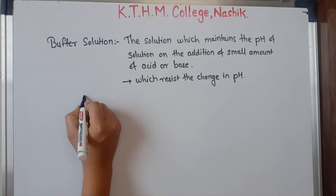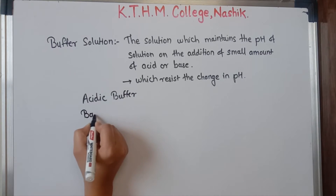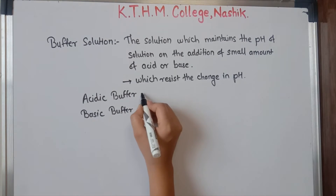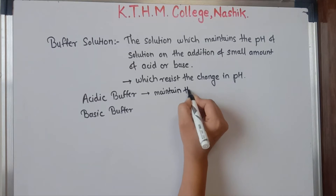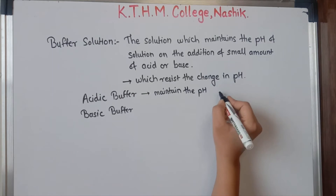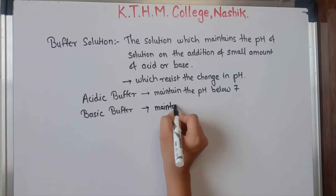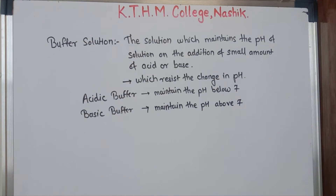In the previous lecture we also saw there are two types of buffer solution: one is acidic buffer and the next is basic buffer. The acidic buffer maintains the pH below seven. So this was all about the buffer solution and its types.